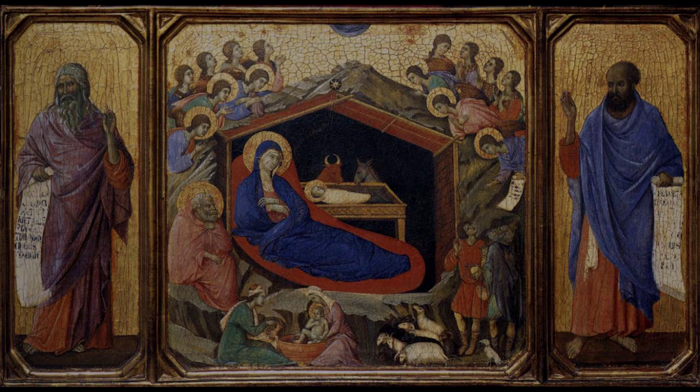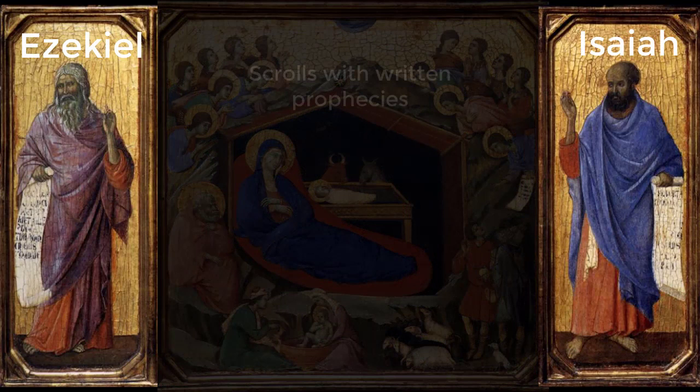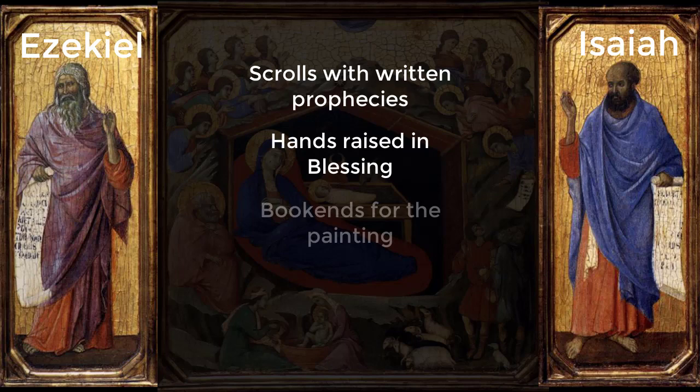Let's examine the nativity scene from the Duccio Maesta — a piece with a history that is both fascinating and very sad. First, you notice that the nativity panel is flanked by two prophets, Ezekiel and Isaiah. They hold scrolls in their hands on which are written the prophecies that foretold the coming of the Messiah. In many of these older paintings, artists added written words into the pictures to make the meanings clear to the viewer. Both have their hands raised in a blessing, and the scrolls provide balance and a framework for the entire piece.